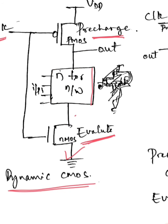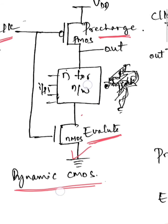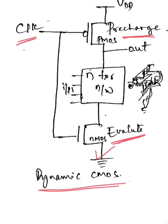That's why the output is precharged to 1 when clock equals 0. How does that output become 1 in precharge state? Because when clock is 0, this PMOS transistor is turning ON and this evaluate transistor is turning OFF.